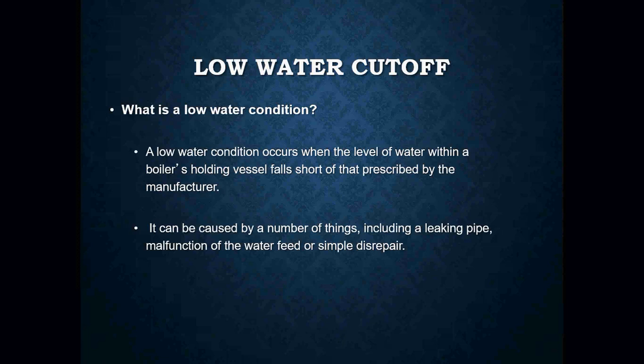A low water condition occurs when the level of water within a boiler's holding vessel falls short of that prescribed by the manufacturer. It can be caused by a number of things — you can have leaky pipes, which can be very visible, a malfunctioning water feed, or simple disrepair.